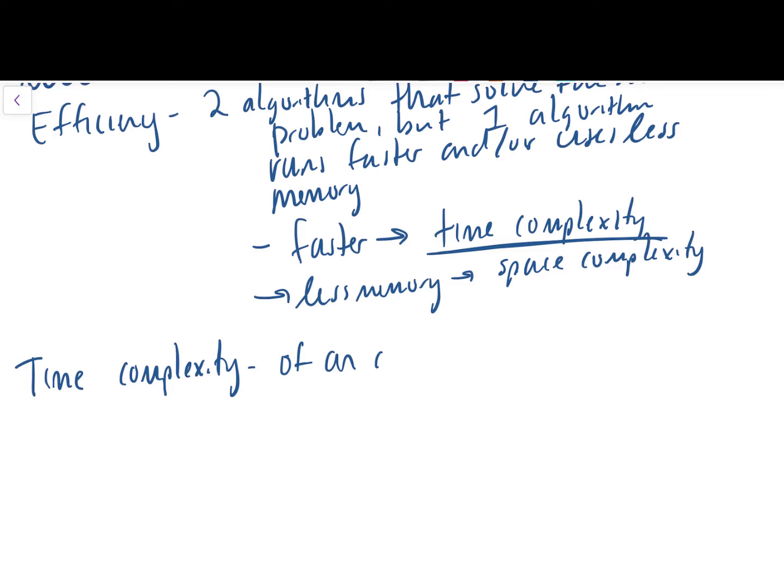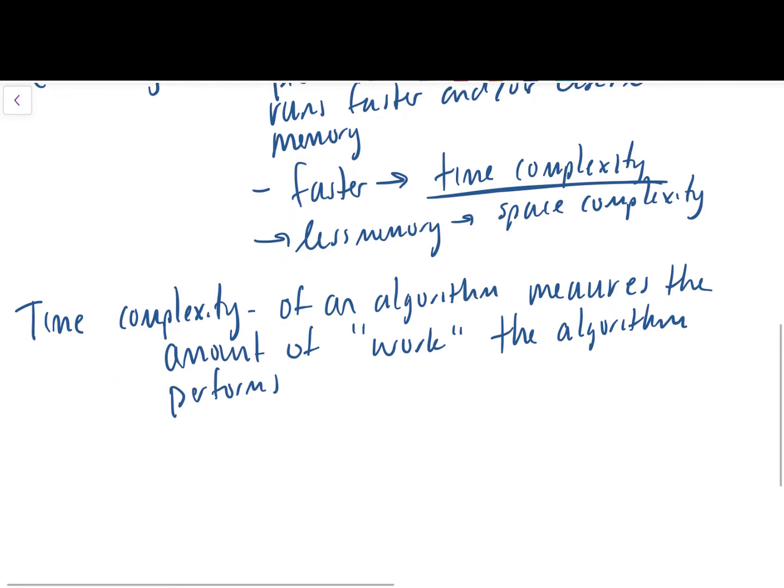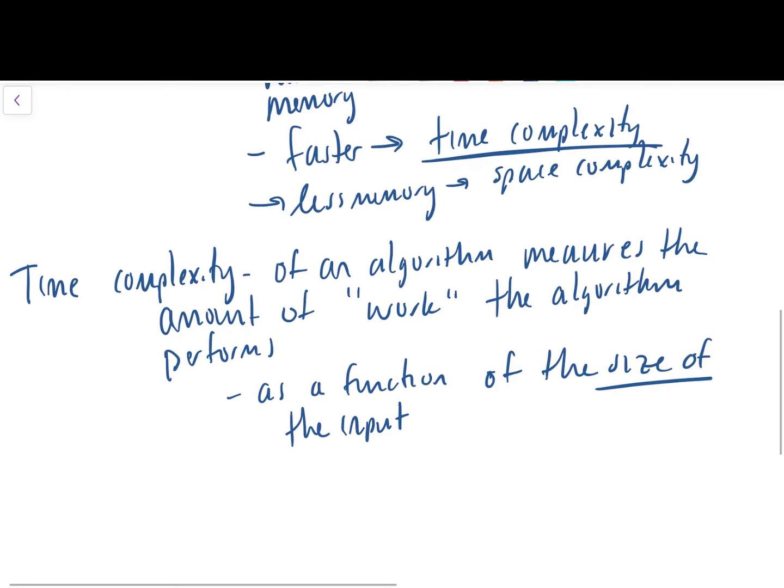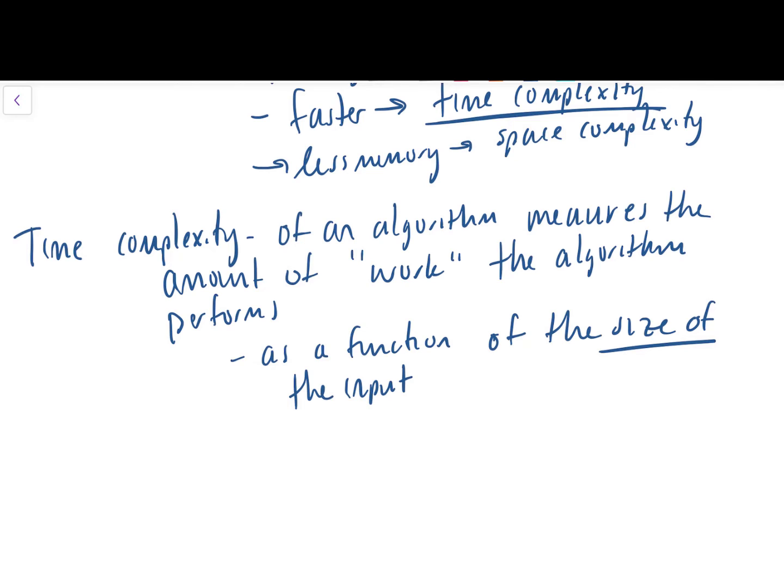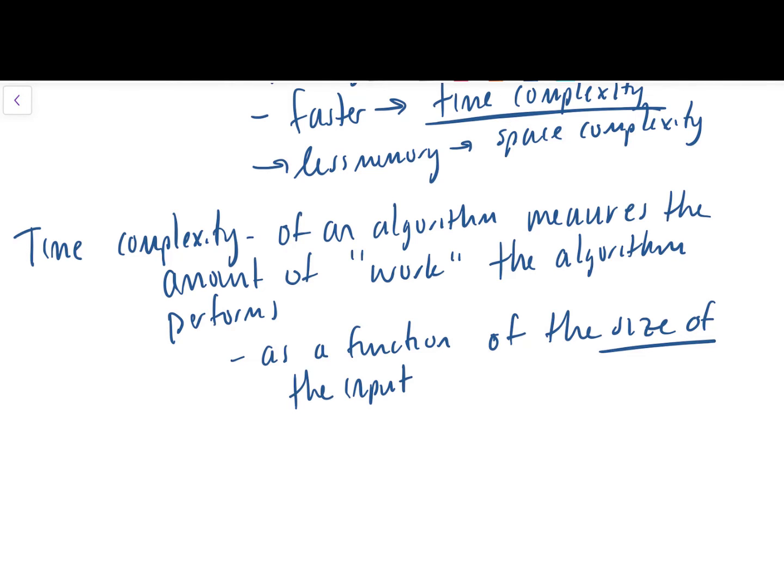We should probably use that one, right? So there's two dimensions here. I'm talking about execution time. If that's faster, we call this efficiency analysis time complexity. And when we're talking about less memory, we're talking about space complexity. In this video, we're going to start with time complexity.